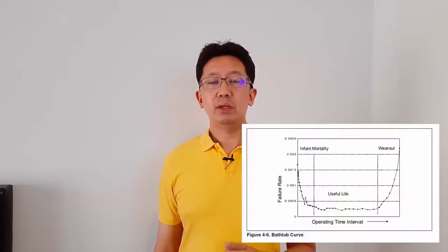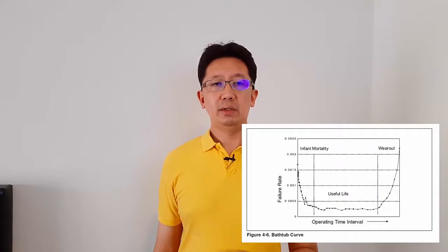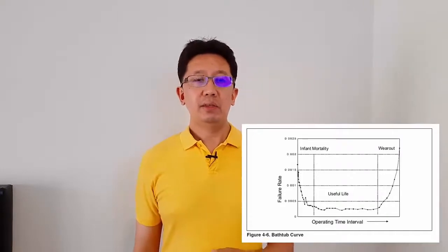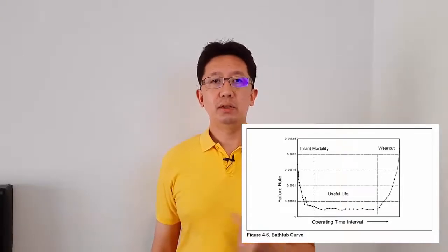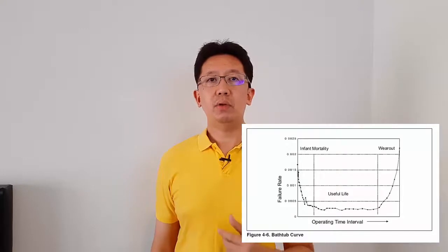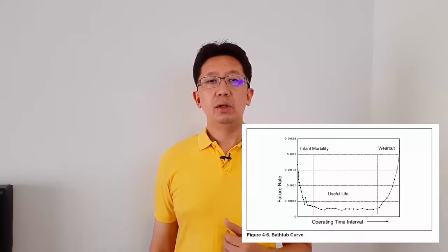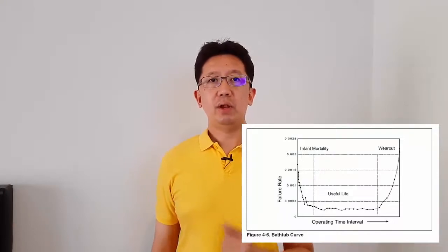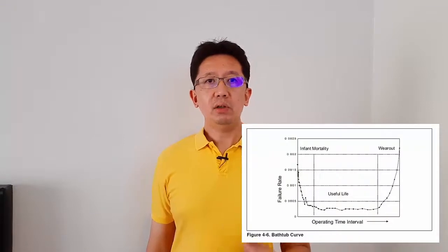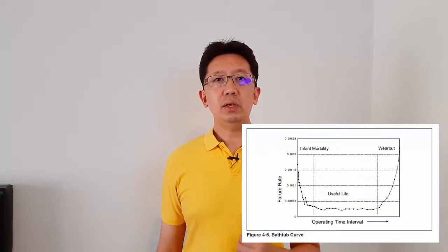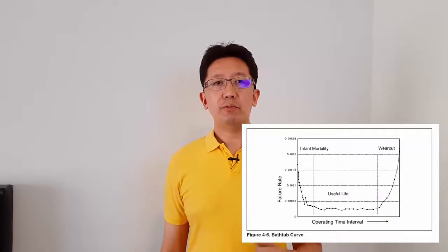The picture below is the bathtub curve, which represents the life cycle of electronic parts. Failure rate is often also called the hazard rate. The failure rate is separated into three regions: first, infant mortality; second, useful life; and third, wear-out zone. In reliability engineering, the failure rate used in calculations is the failure rate in the useful life region, or constant failure rate. The other region, such as infant mortality, will be removed during the commissioning or startup phase.